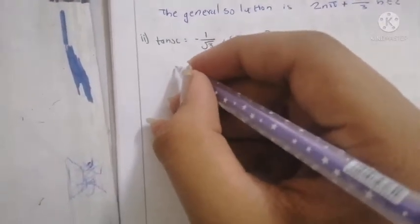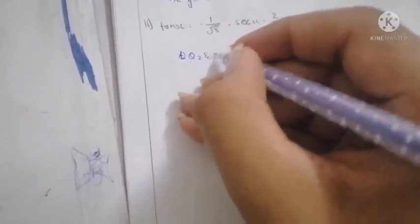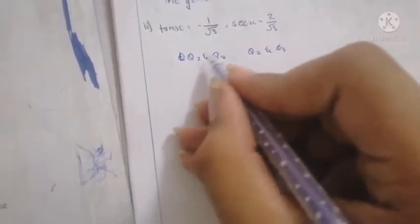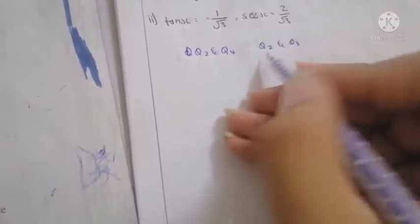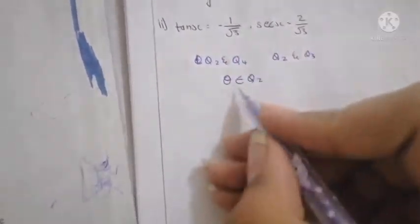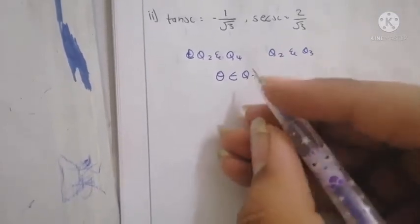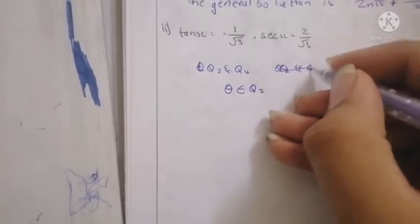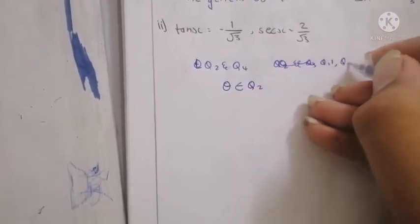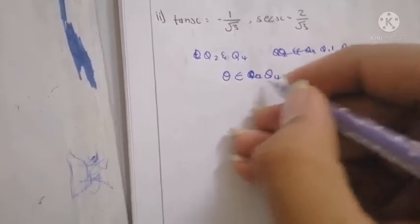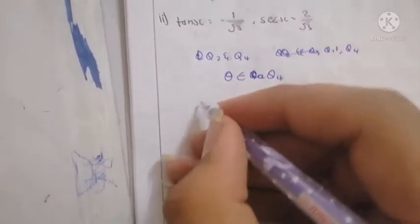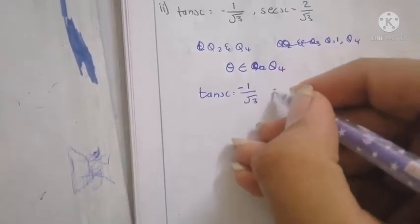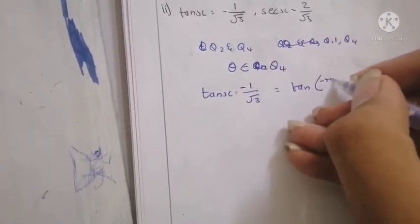Next: tanx is negative (quadrants 2 and 4) and secant is positive (quadrants 1 and 4), so θ belongs to quadrant 4. tan(x) = -1/√3, satisfied by tan(-π/6) = -1/√3.